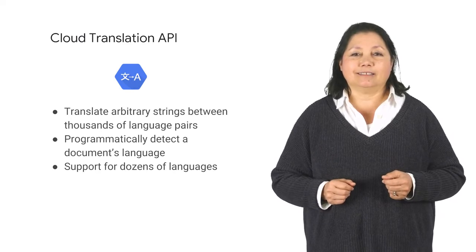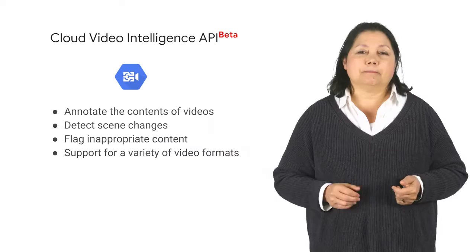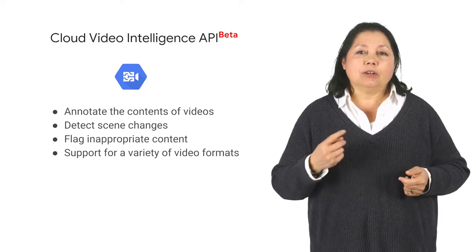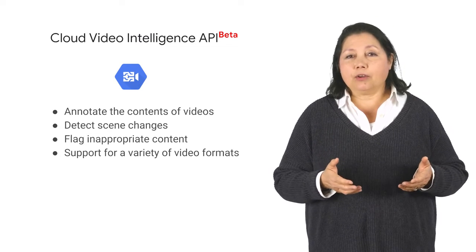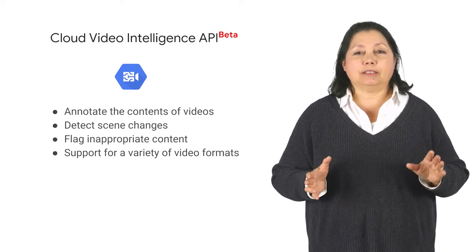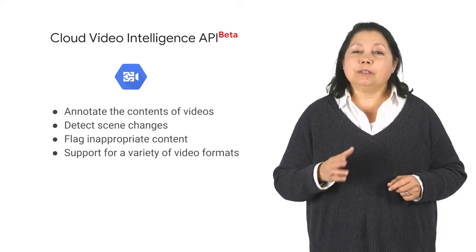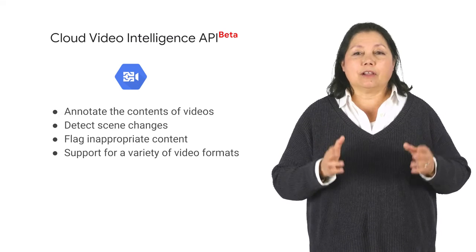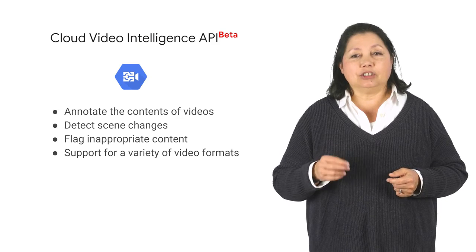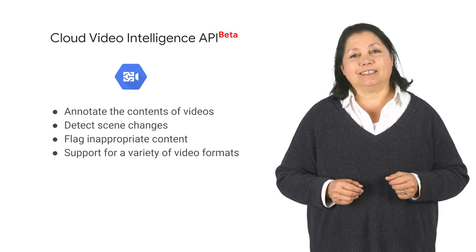The Cloud Video Intelligence API lets you annotate videos in a variety of formats. It helps you identify key entities — that is, nouns — within your video and when they occur. You can use it to make video content searchable and discoverable. At the time this video was produced, the Cloud Video Intelligence service was in beta, so check the GCP website for updates.